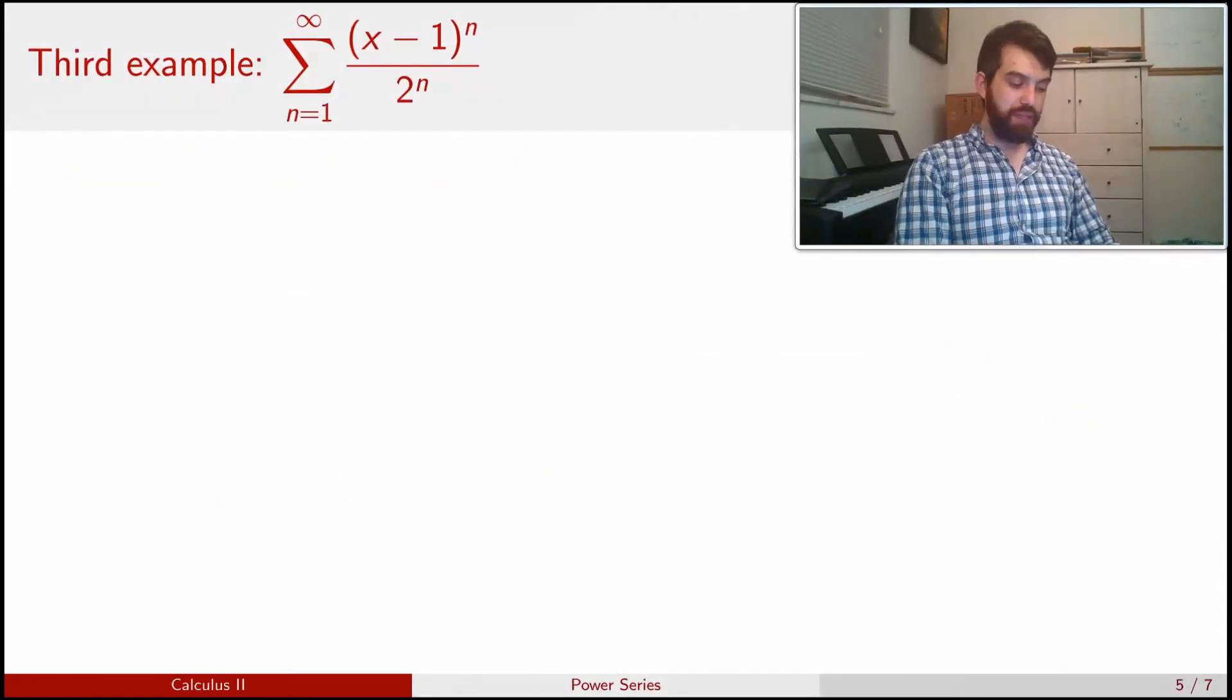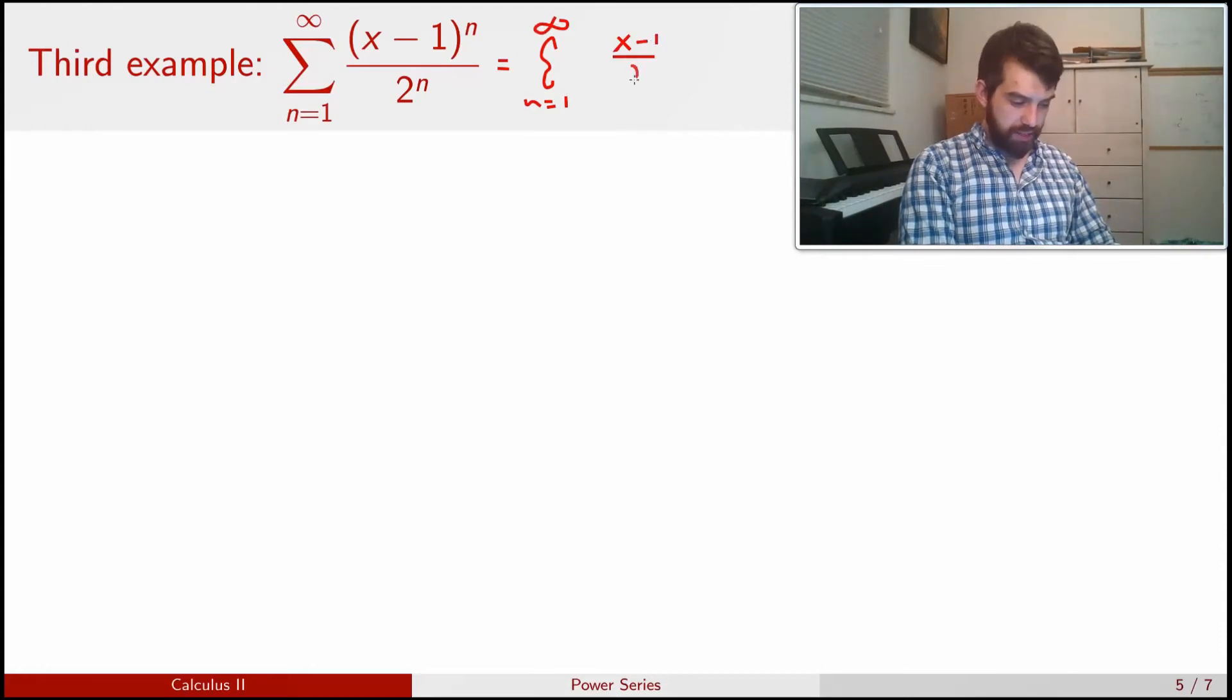Okay, one more example. I've written this as (x - 1)^n divided by 2^n. And I could go for the ratio test, but I'm actually going to come along here and do a little bit of algebra. I'm going to say this is (x - 1) divided by 2, all to the power of n.